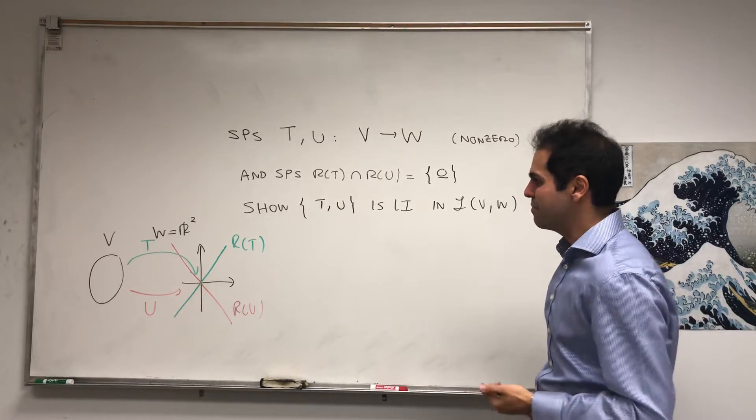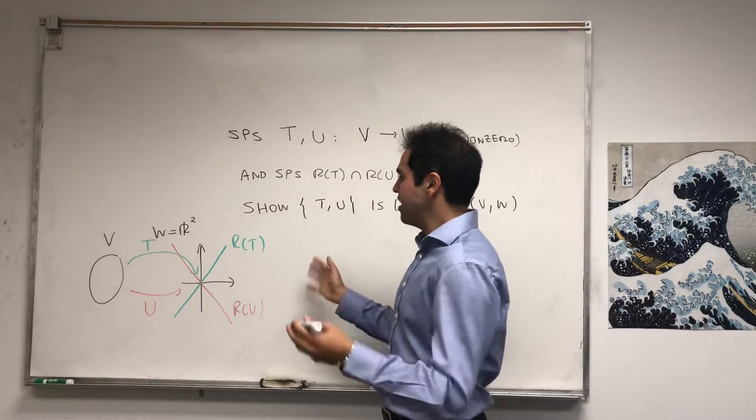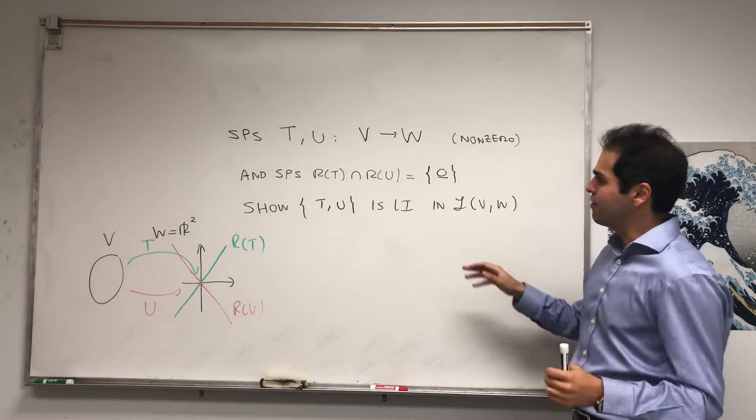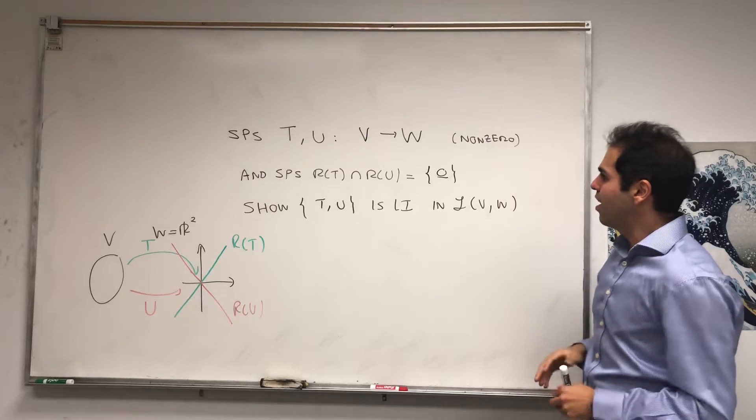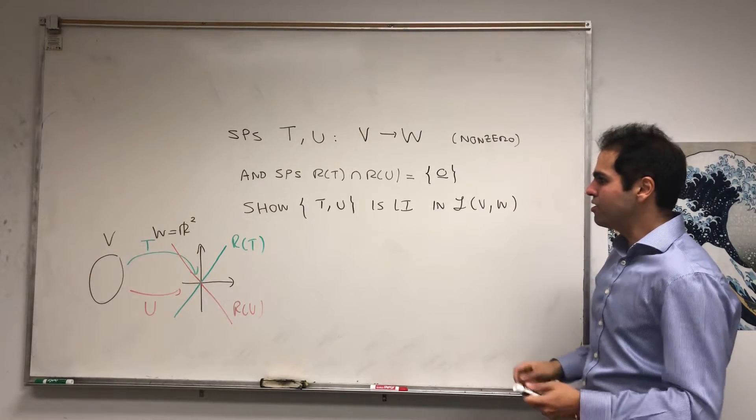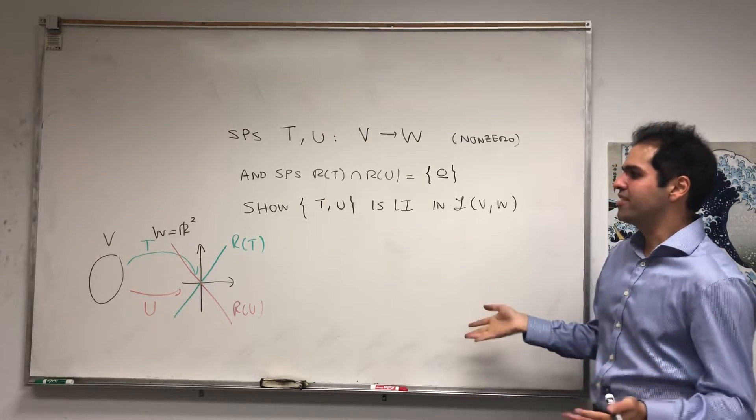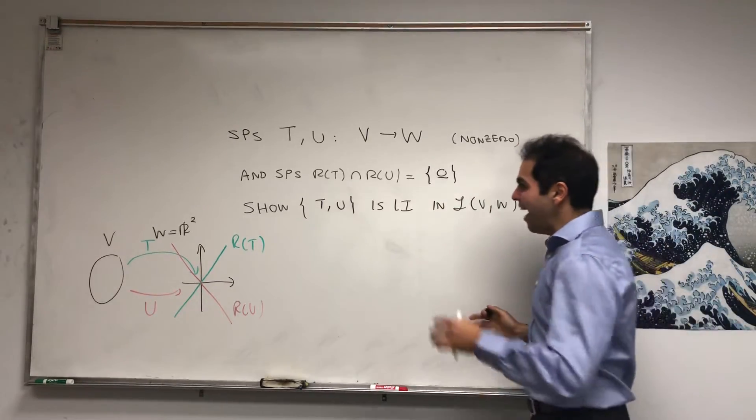But that said, I think in general this is wrong if we don't assume the ranges intersect at zero, because there are lots of linearly independent linear transformations that are, for example, onto R2.